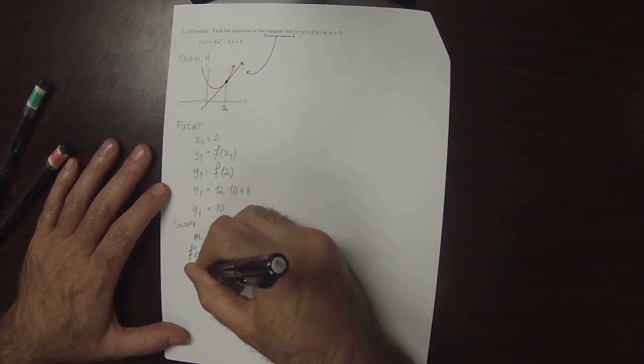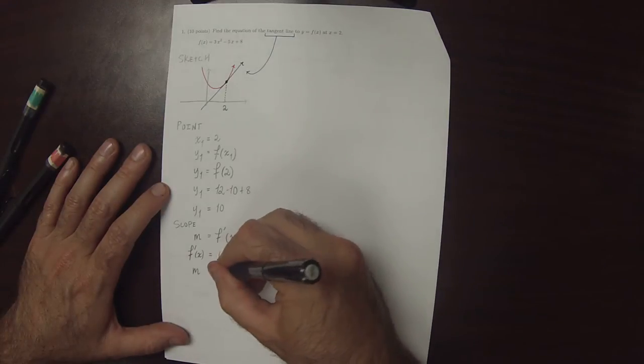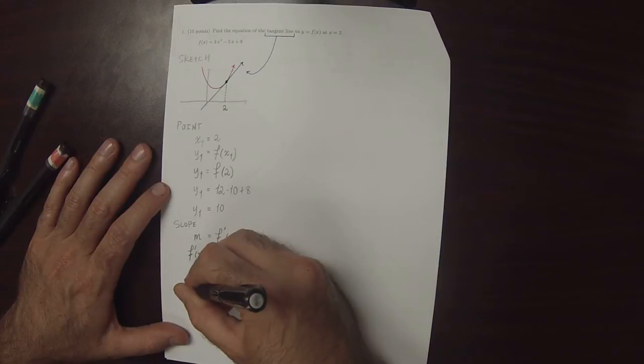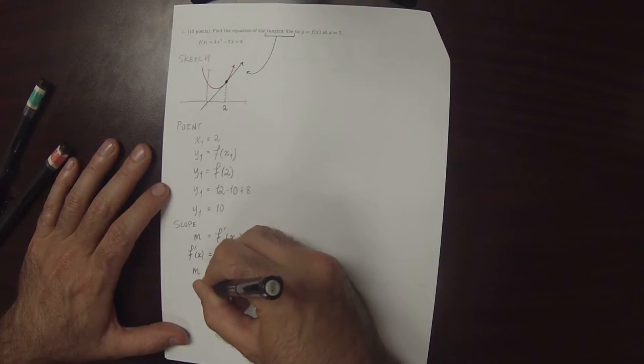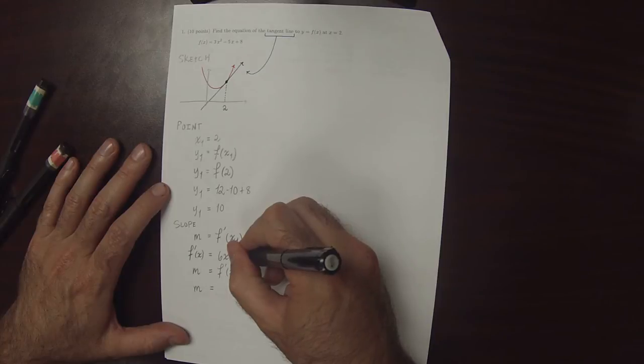And therefore, the slope that we're looking for is the derivative evaluated at 2. So, the slope is 12 minus 5 is 7.